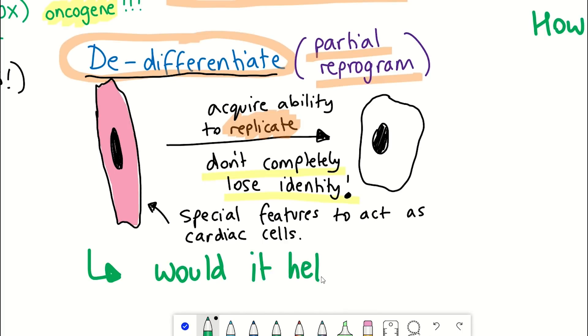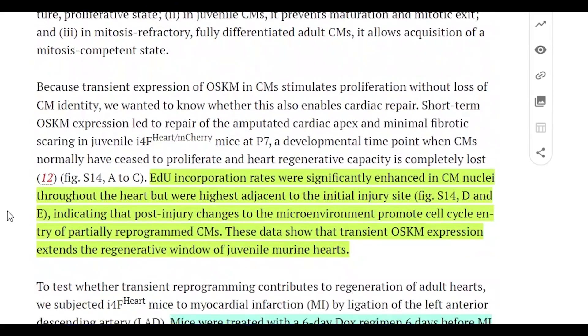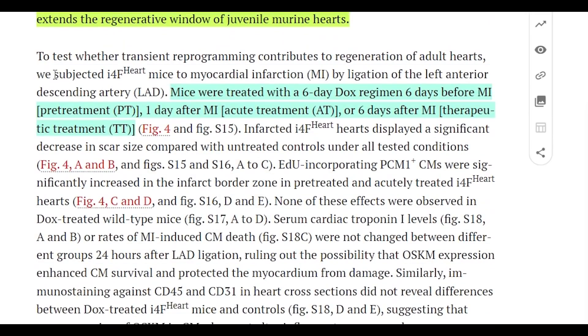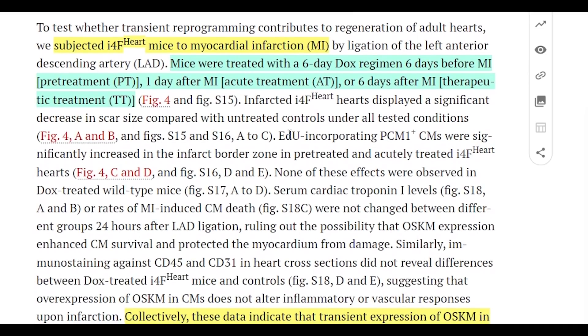Well, as I mentioned, they were studying mice and to see how the OSKM factors could repair damage in their hearts, they had to induce some damage. So they follow a protocol whereby they can induce myocardial infarction in the hearts. And to test how the factors could help with repair, they expressed the factors either six days prior to the event, one day after the myocardial infarction, or six days after. And in each of these conditions, they gave the mice the doxycycline for six days to have that kind of partial reprogramming. So effectively, we have pre-treatment, acute treatment, or therapeutic treatment.